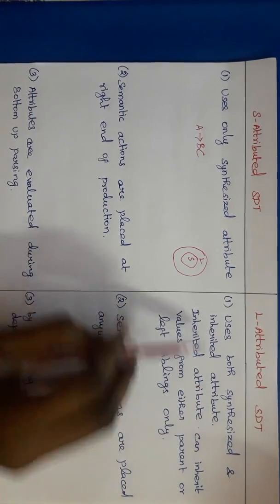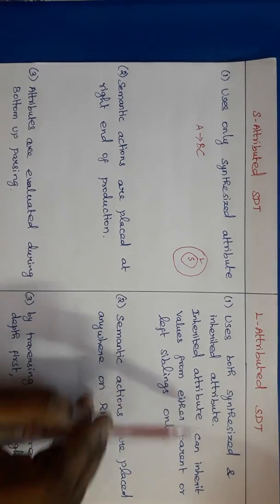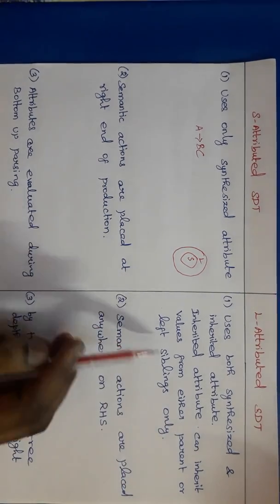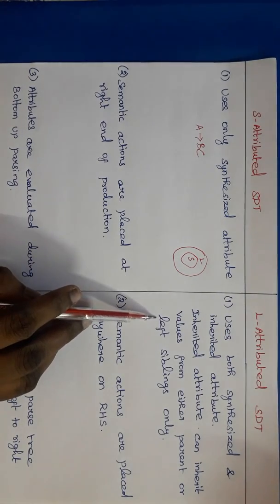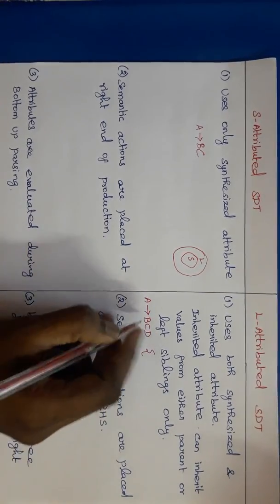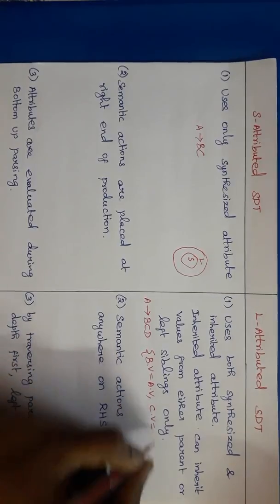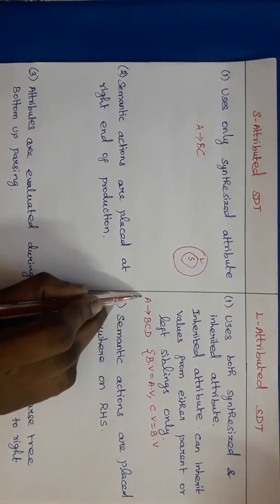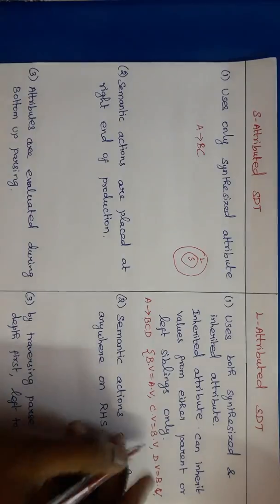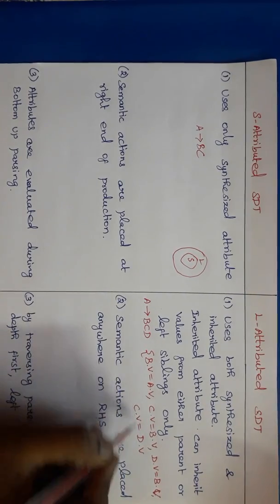L-attributed SDT uses both synthesized and inherited attributes. But one restriction is that the inherited attribute can be evaluated from the parent or from the left siblings alone, not from the right siblings — therefore it is called L-attributed. For example, A tends to BCD: B's value can be evaluated from A, C can be evaluated from B or A, and D's value can be B's value. But writing C.V = D.V is wrong.